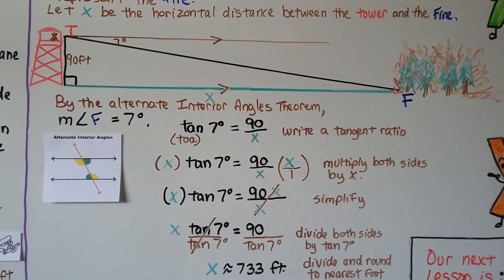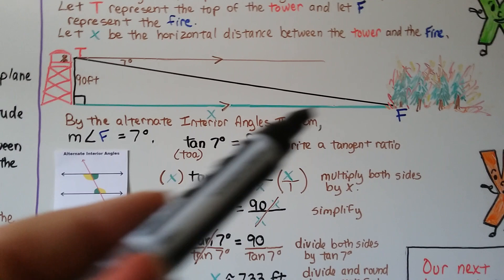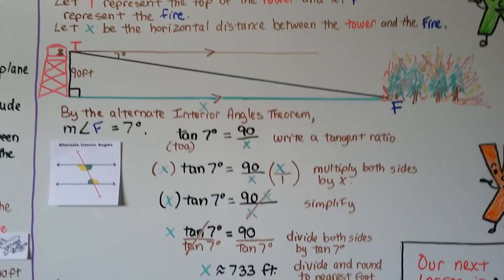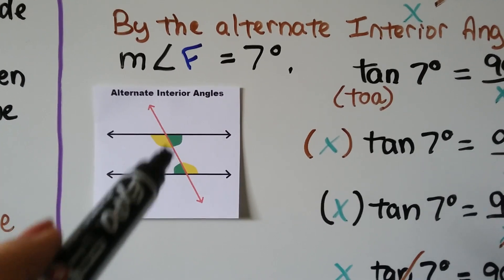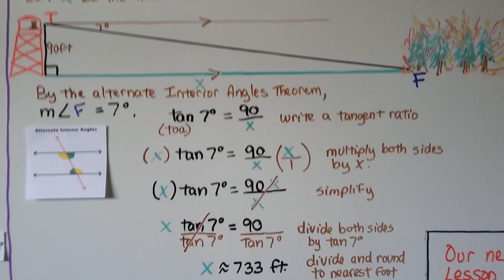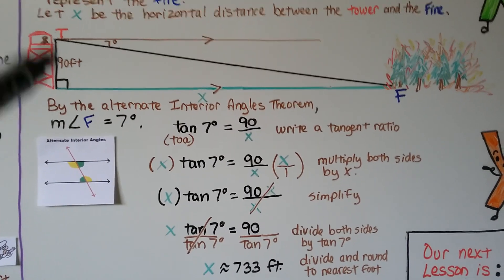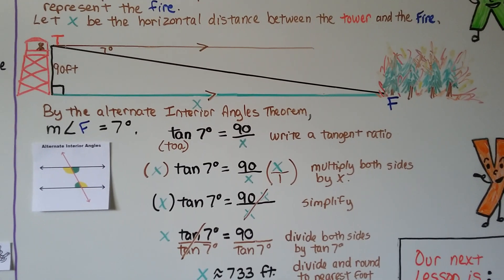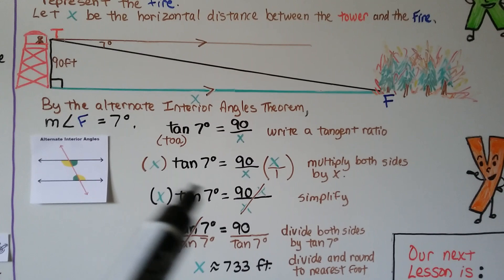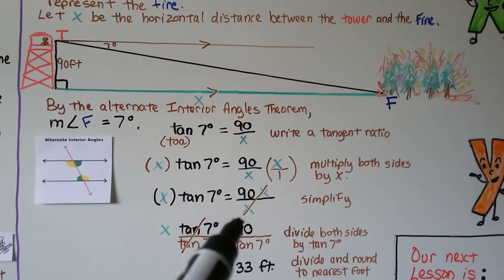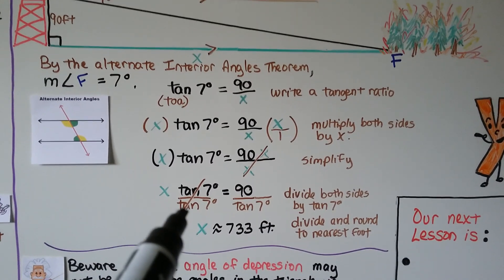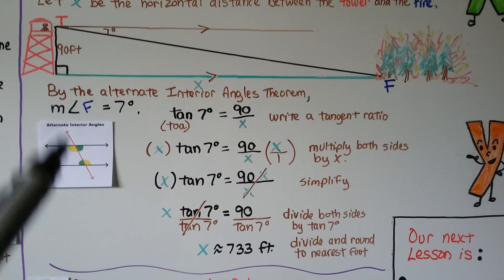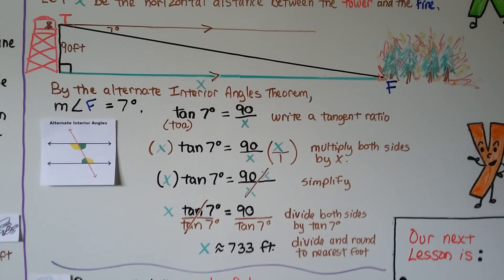By the alternate interior angles theorem, the measure of angle F is also 7 degrees — if the angle of depression is 7 degrees and we have parallel lines, then by alternate interior angles that angle at F is also 7 degrees. We have an opposite over an adjacent side X, so we use a tangent ratio: tangent of 7 degrees equals 90 over X. Multiplying both sides by X and dividing by tangent of 7 degrees gives X equals 90 over tangent of 7 degrees, which is approximately 733 feet.